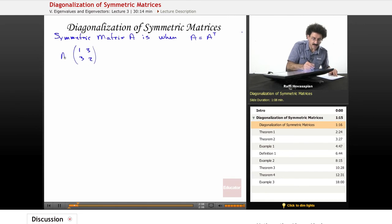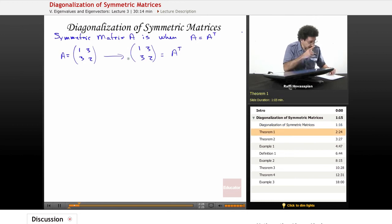So let's say this is matrix A. If I were to transpose it, which means shift it along its main diagonal, well, 1, 2, 3, 3. This is equal to A transpose. It's the same thing. 1, 3, 3, 2. This is a symmetric matrix.